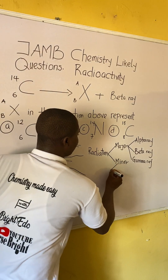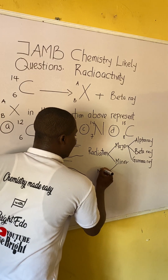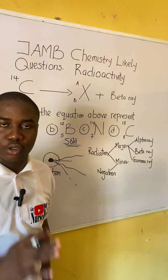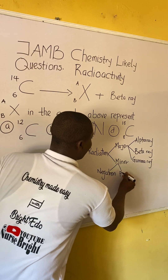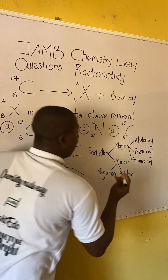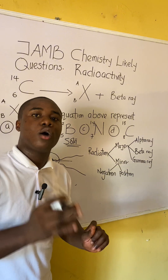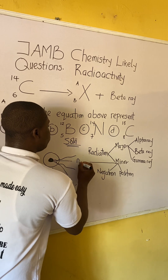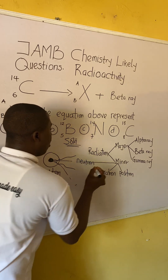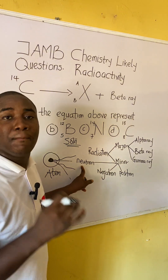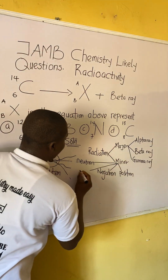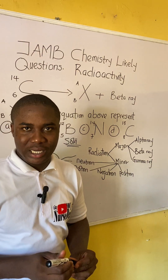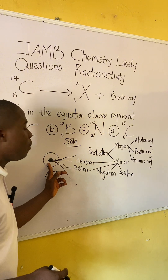Moving over to the minor radiations, they include: number one, negatron — also called a negative electron; another one is called positron — also called positive electron; another one is neutron, which is a minor radiation; and lastly we have proton, which is also a minor radiation. All of these radiations come from the nucleus of an atom, and this is what we call radioactivity.